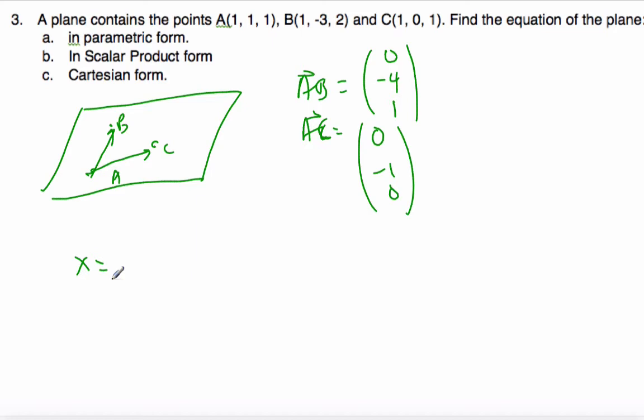If I want to find it in parametric form, I'm going to choose point A. Let me write it in vector form first so we can see what it actually looks like. So I get R is equal to 1, 1, 1. If I choose point A, I could choose any of these three points. It will be satisfactory.